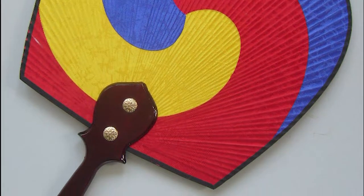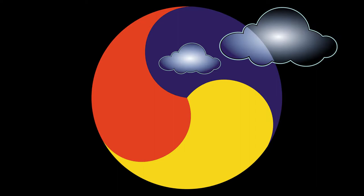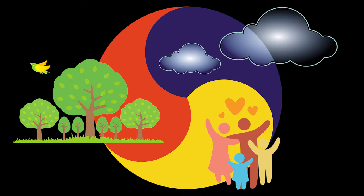It's the primary colors of red, yellow, and blue. The blue represents the sky, the red represents the earth, and the yellow represents the humans.